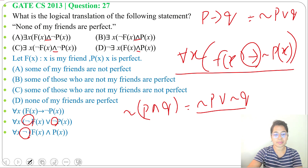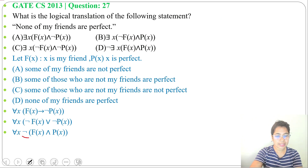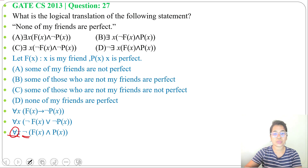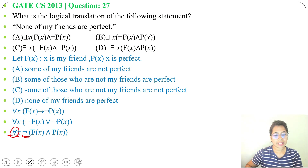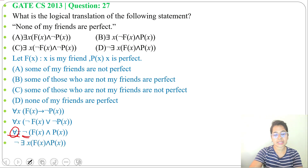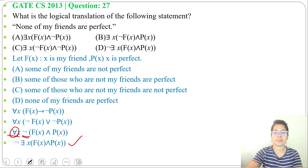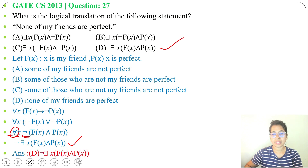We apply De Morgan's law, then take this negation outside before the quantifier. So the universal quantifier changes to an existential quantifier. When we take the negation outside, it becomes negation of there exist x, f(x) and p(x). This is exactly what is present in option D, so the answer is option D.